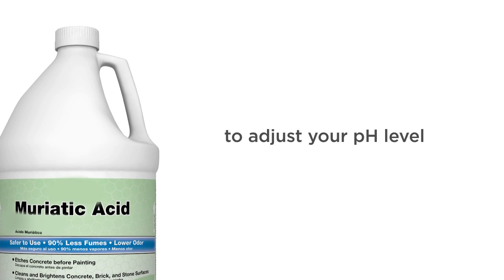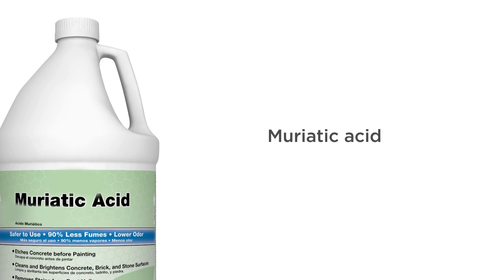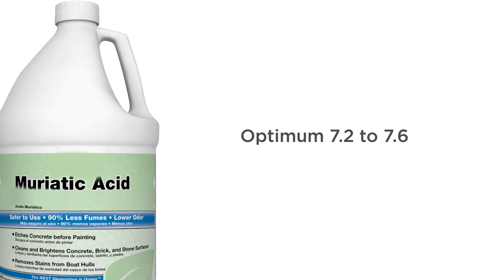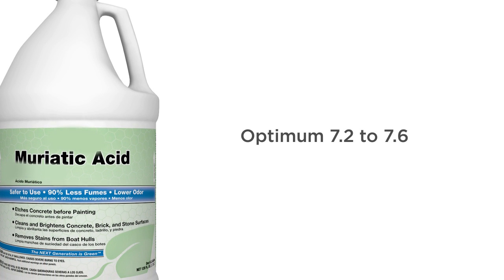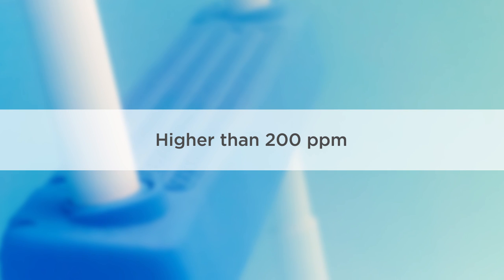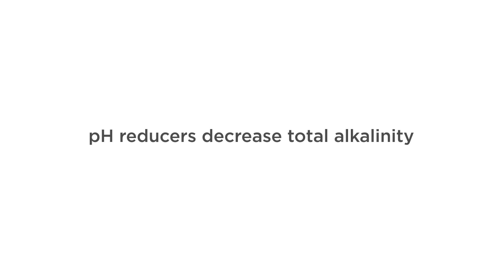To adjust your pH level, use a pH reducer like muriatic acid to lower the level back to an optimum 7.2 to 7.6. If your pool's total alkalinity is higher than 200 ppm, cloudy water can occur. The proper total alkalinity helps stabilize the pH level and neutralize any acids.